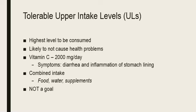Tolerable Upper Intake Levels, also known as Upper Levels or ULs, is the highest level that a nutrient can safely be consumed — at this level, it is likely not to cause any health problems. An example: the upper level for vitamin C is set at 2,000 milligrams per day. Any level above this can cause diarrhea and inflammation of the stomach lining. The upper level is based on intake from food, supplements, and fortified foods. The upper level is not a goal, but rather the highest amount a nutrient can be consumed without any adverse effects.